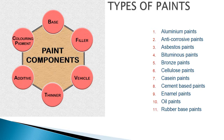The types of paint include aluminum paints, anti-corrosive paints, asbestos paints, bituminous, bronze, cellulose, casein, cement-based, enamel paints, oil paints, and rubber-based paints.